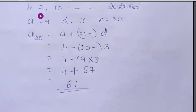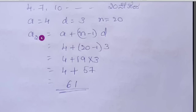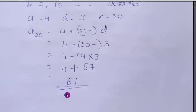Find the 20th term of the arithmetic progression 4, 7, 10 using the formula. Here a = 4, d = 3, n = 20. Substituting into aₙ = a + (n − 1)d: 4 + (20 − 1) × 3 = 4 + 19 × 3 = 4 + 57 = 61.